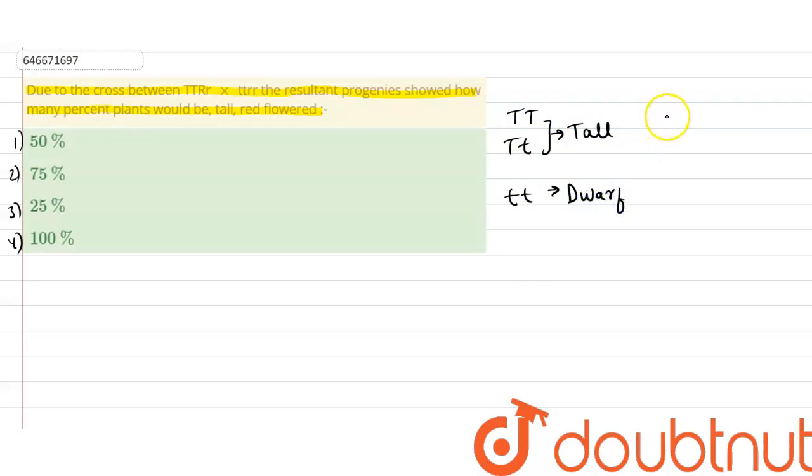Similarly, capital R capital R and capital R small r, they will be red flowers. And small r small r will be white flower because red is a dominant gene here.